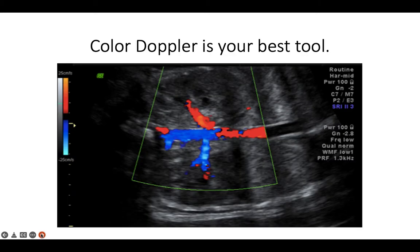The easiest way I've found to do this is in a coronal view using color Doppler. In this image, you can clearly see the aorta running horizontally and the right and left renal arteries branching off it.